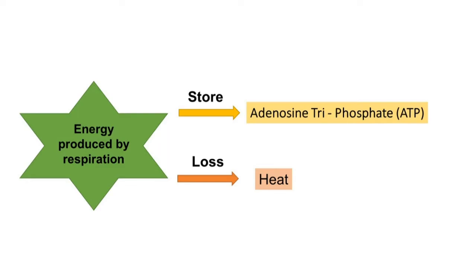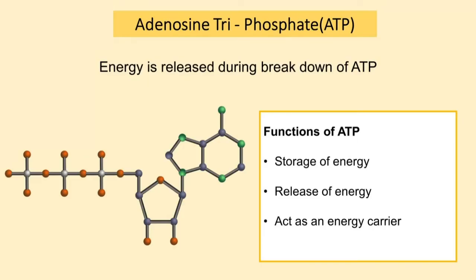When the body needs energy for its biological processes, energy is released by the breakdown of ATP. The functions of ATP are: storing energy after production, releasing energy when needed, and acting as an energy carrier.